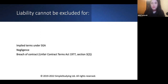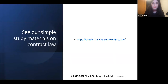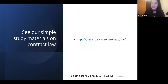Regarding implied terms under the Sale of Goods Act: liability cannot be excluded for breach of Section 13, 14, and 15 under the Sale of Goods Act 1979. Also, liability cannot be excluded for negligence, and liability cannot be excluded for breach of contract. I suggest you have a look at our study materials on contract law for further information to identify other areas you should be revising for assessments.